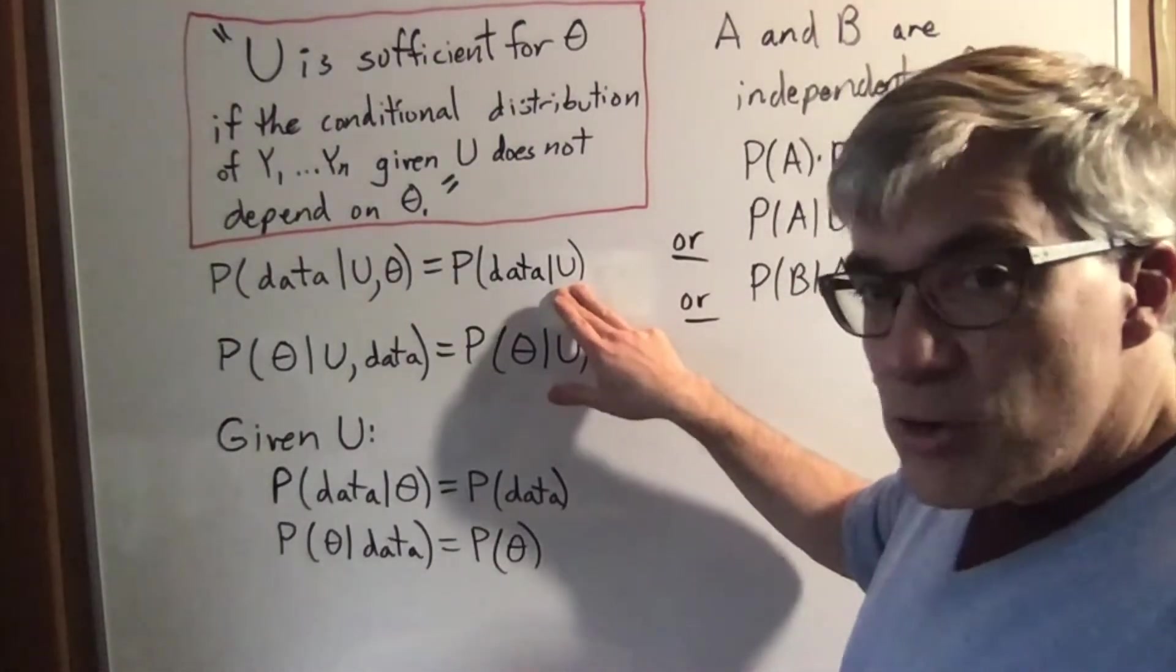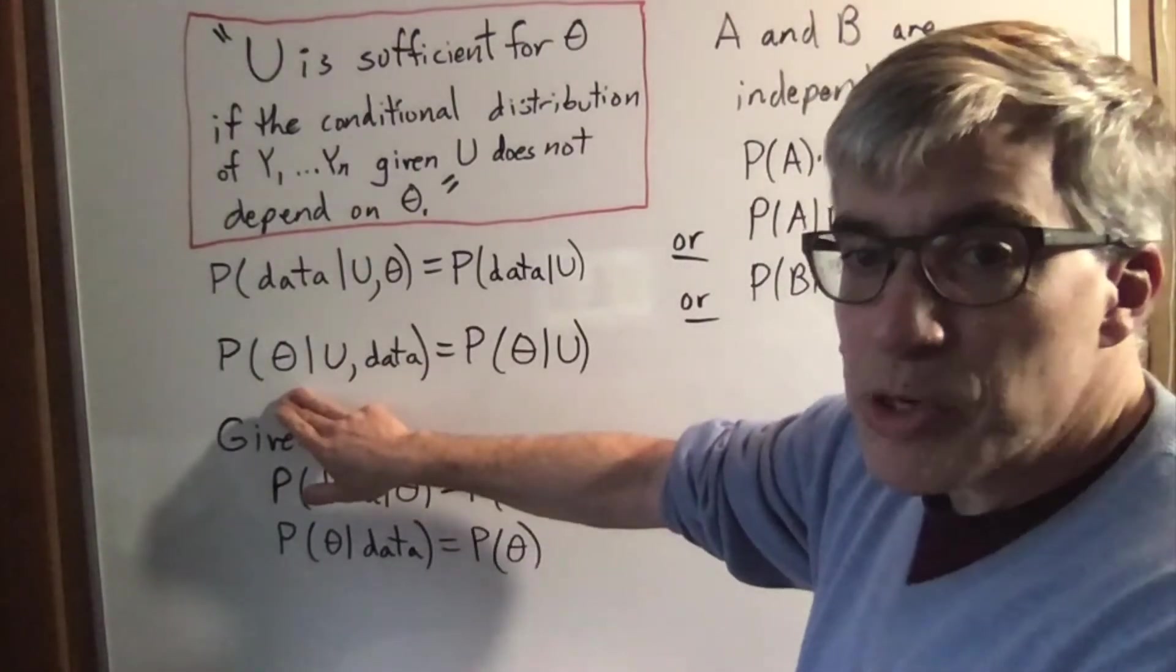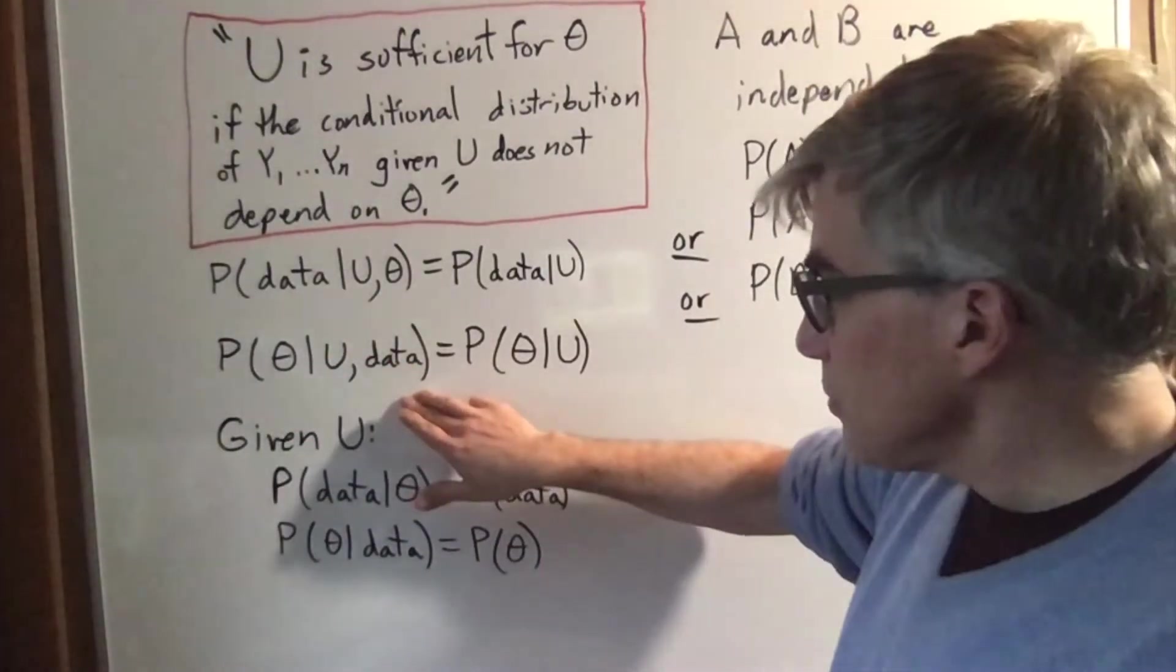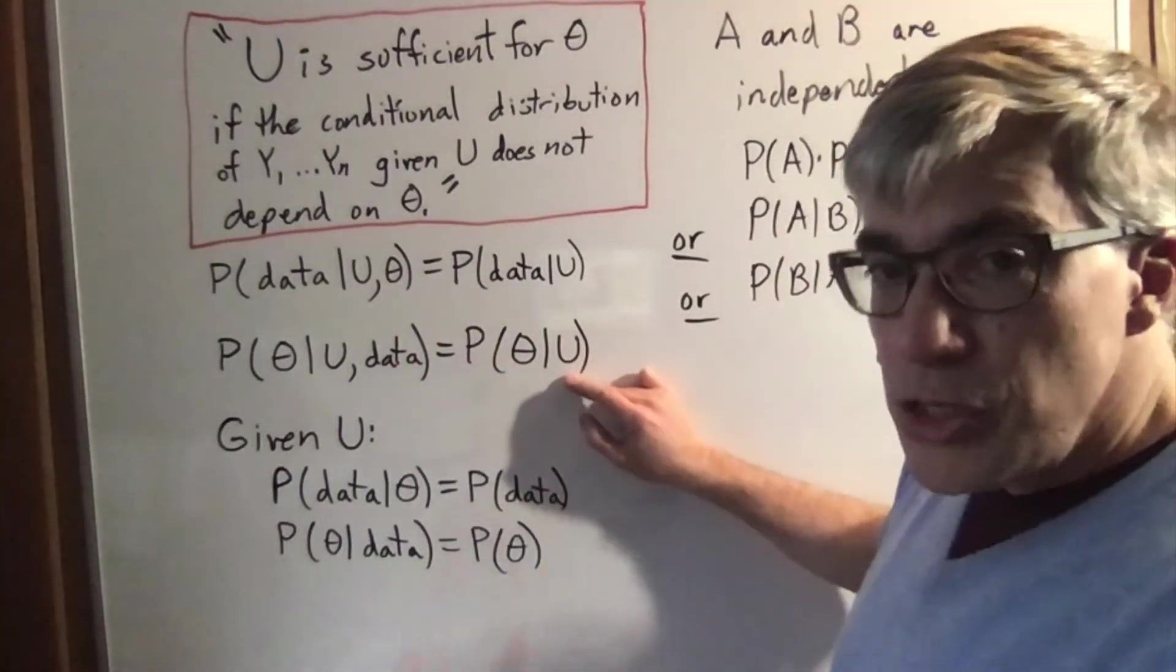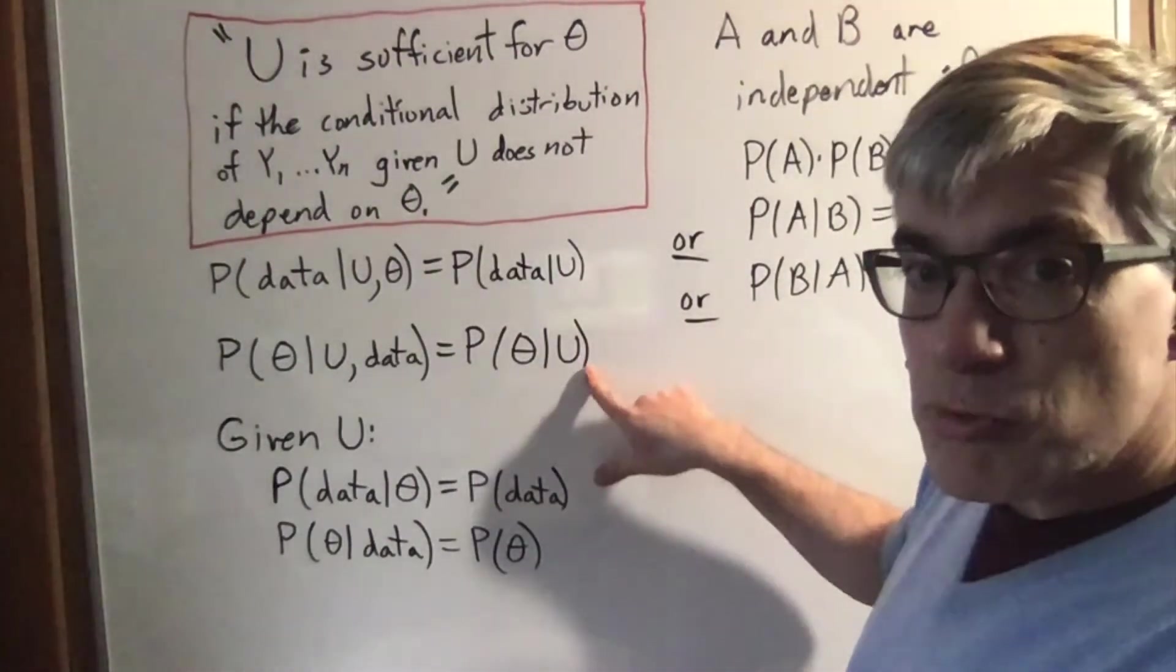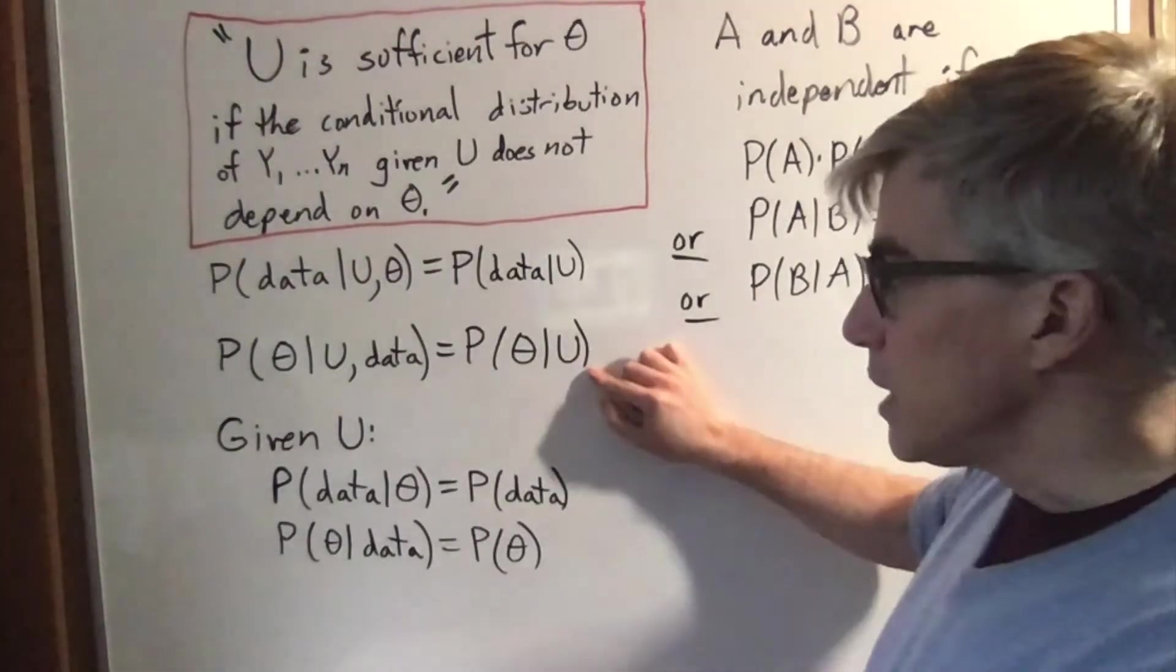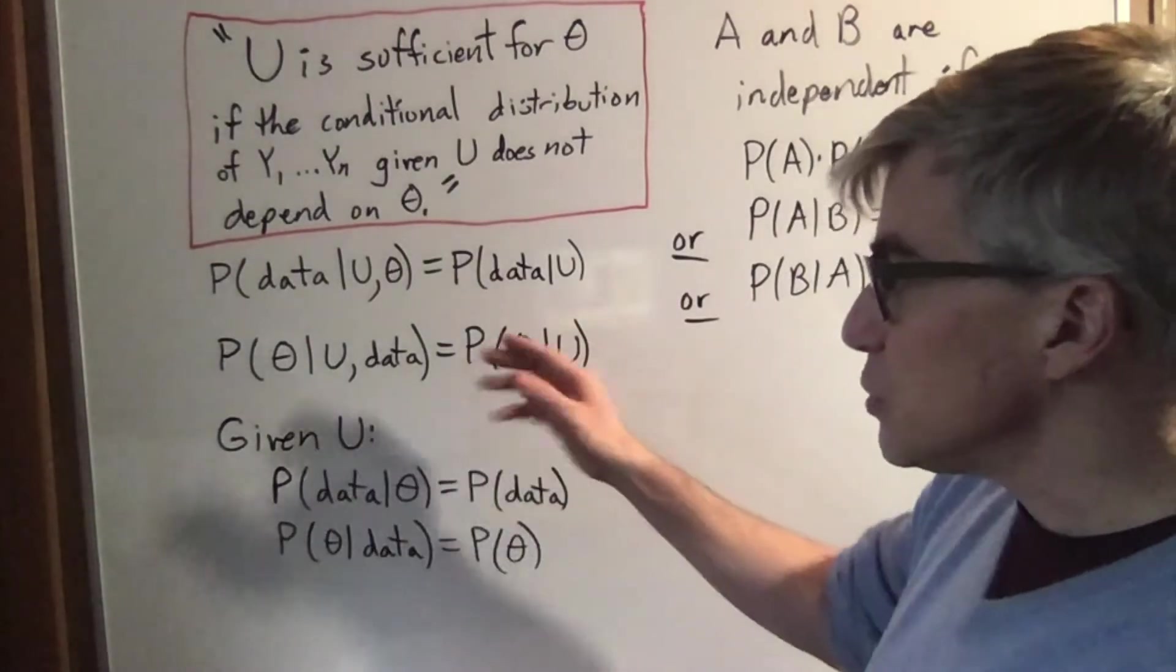Because that would be more like saying this: the probability of the parameter having a value given U and the data is equal to the probability of the parameter having a value given U. This is the one that says you don't have to go back to the raw data for more information to improve your estimate. Like your estimate is just as good with the data as without, so long as you have the sufficient statistic.